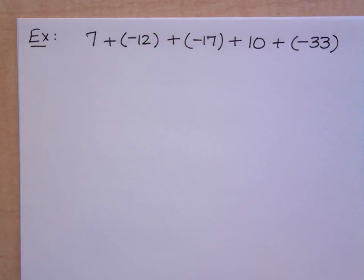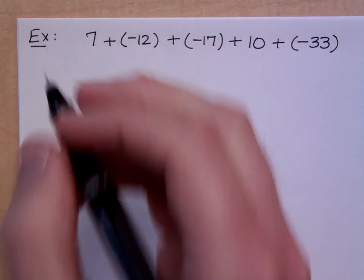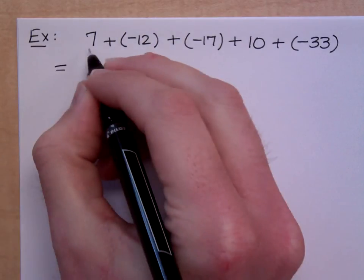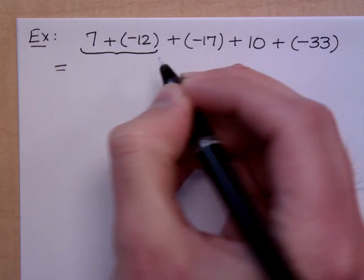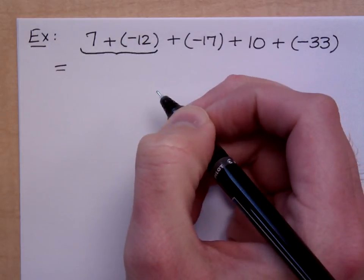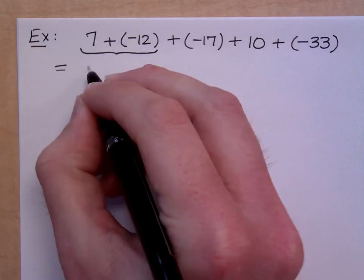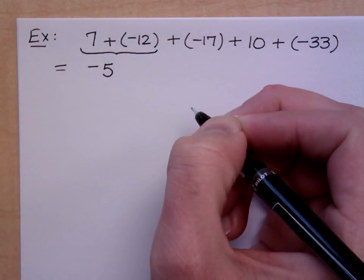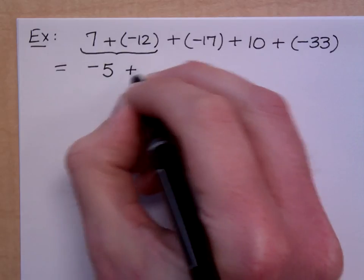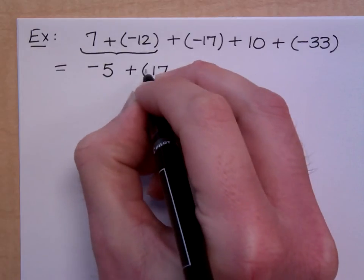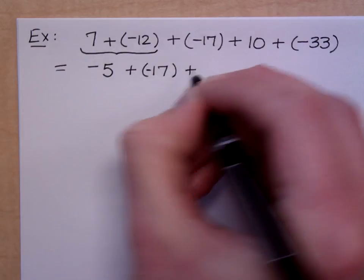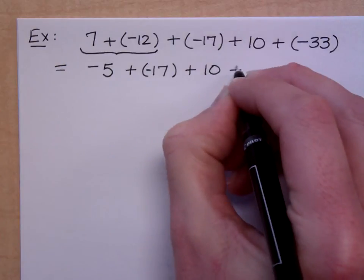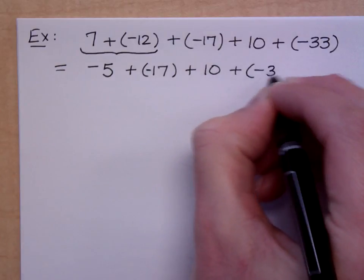Now there are different ways of going about simplifying this. Let's do it the way we were just doing it. So if I take these first two numbers together, what does that give me? It gives me a negative 5, right? The negative number has a larger absolute value. I'm going to take a long time here to do this problem. I want to show you every single step. So if you get stuck, you can always go back to this.